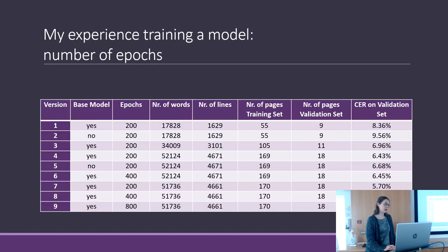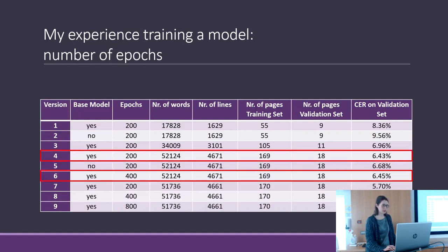I also tried increasing the number of epochs. It doesn't change so much — between version 4 at 200 epochs and version 6 at 400 epochs, the character error rate doesn't improve.